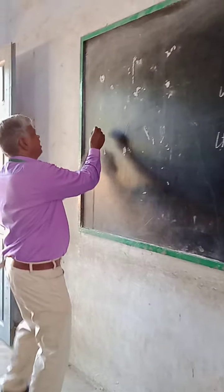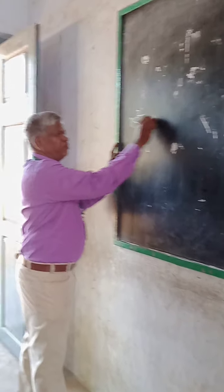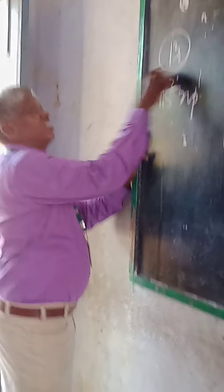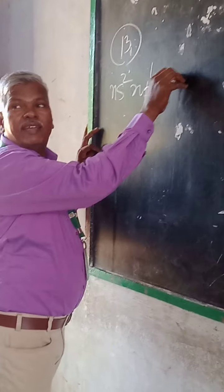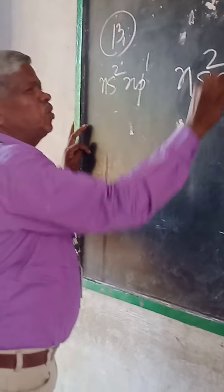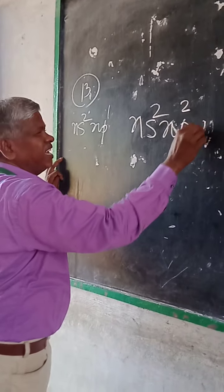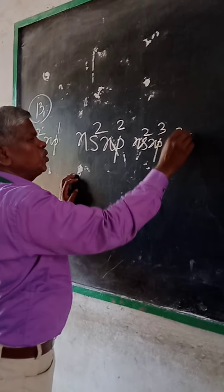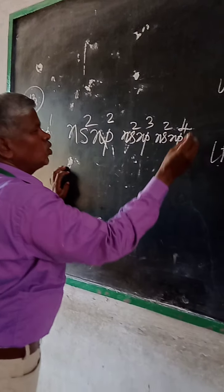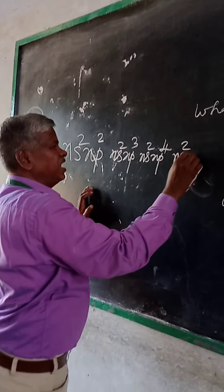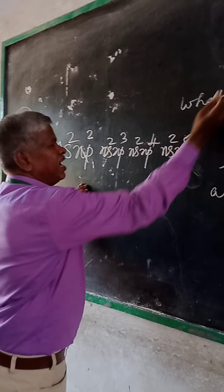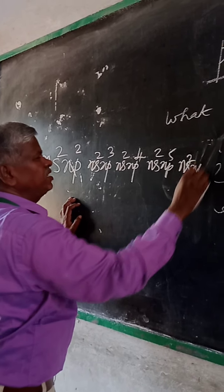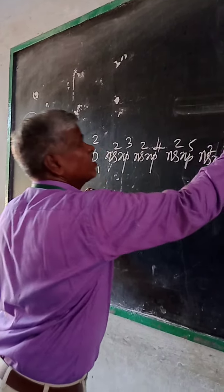Group 13 has configuration ns2, np1. Group 14 is ns2, np2. Group 15 is ns2, np3. Group 16 is ns2, np4. Group 17 is ns2, np5. And group 18 is ns2, np6.